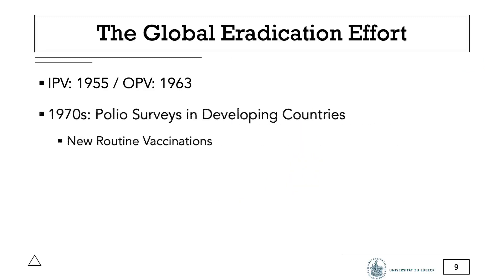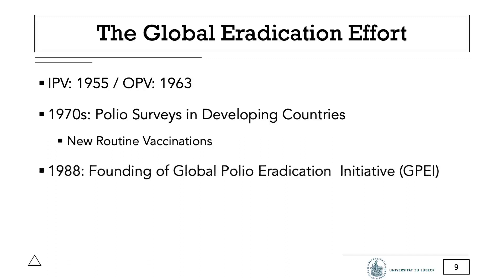It took a bit longer in developing countries to recognize cases of paralysis as being caused by polio. After surveys in the 1970s, the prevalence of polio in other areas of the world was recognized, and efforts were made to prevent it there as well through vaccinations. One organization which has supported this goal is Rotary International, a non-profit organization, which began in 1979 by vaccinating six million children in the Philippines, and, together with the World Health Organization, launched the global polio eradication initiative in 1988.